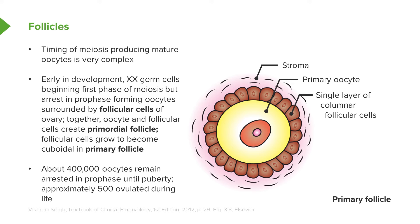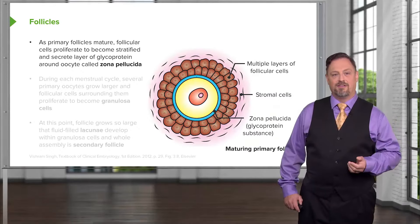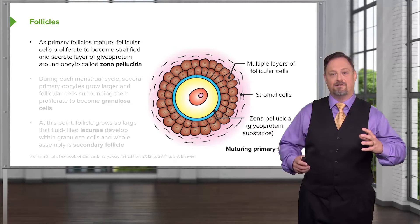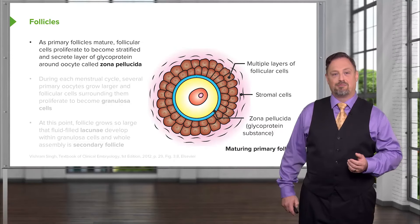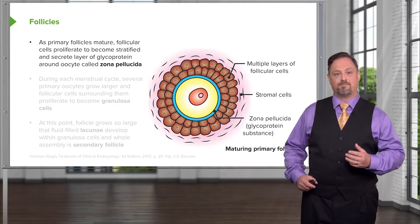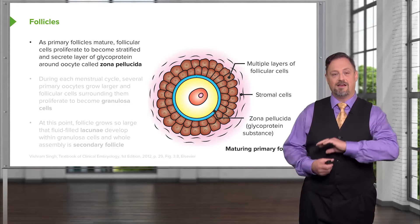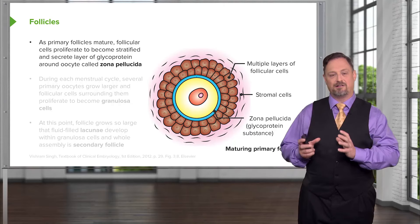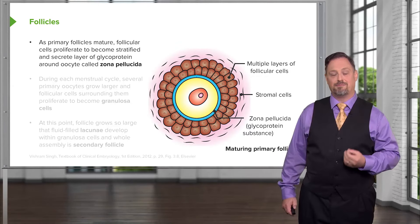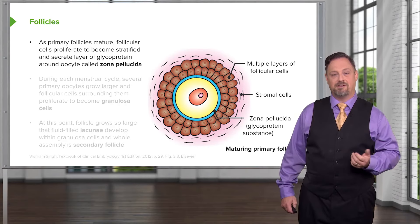Roughly 500 will be ovulated during a lifetime. As the primary follicles get more mature, the follicular cells around them proliferate and become stratified, so we have multiple layers of follicular cells. These maturing primary follicles are those responding to the hormonal signals present throughout the menstrual cycle. As this is occurring, the follicular cells secrete a protective coating of glycocalyx around the ovum, called the zona pellucida, which is important in protecting the egg as it migrates down the oviduct and may or may not become fertilized.